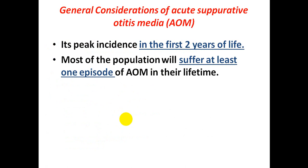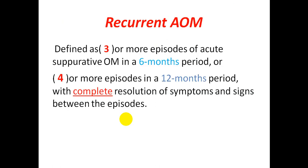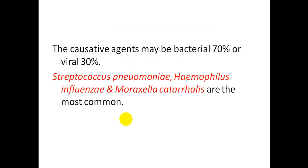The peak incidence of acute suppurative otitis media is in the first two years of life, and most of the population will suffer at least one episode in their lifetime. Recurrent acute suppurative otitis media is defined as three or more episodes in a six-month period, or four or more episodes in one year, with complete resolution of symptoms and signs between episodes. The causative agents are bacterial in 70% of cases and viral in 30%.